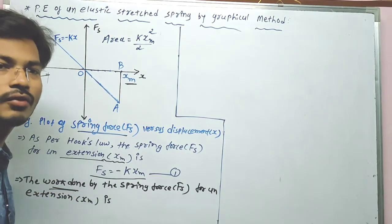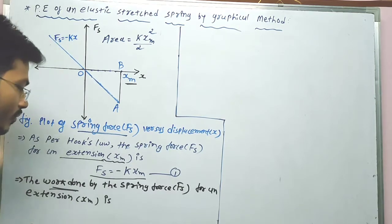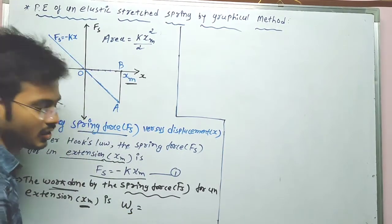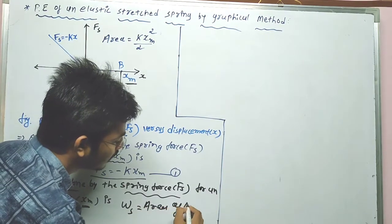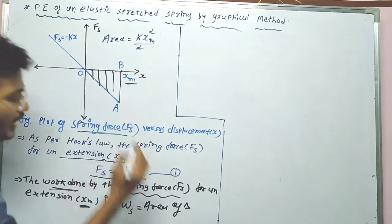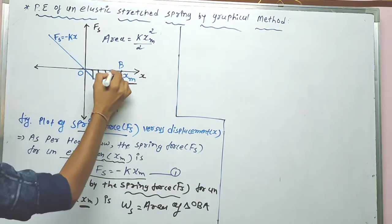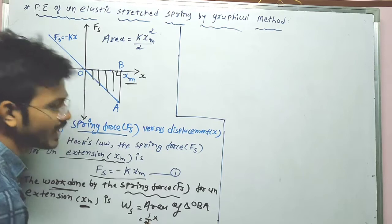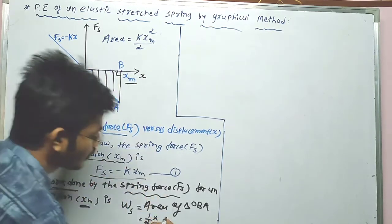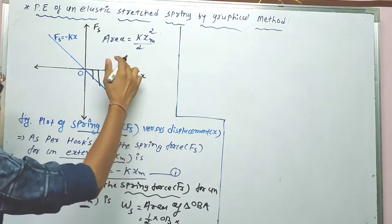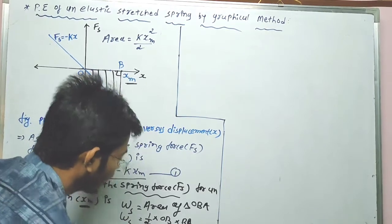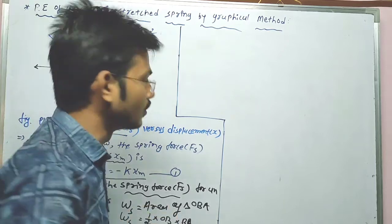Now we have to find out the work done by the spring force Fs for extension of xm. According to our figure, the work done by the spring Ws is equal to the area of a triangle. The area of a triangle is equal to half times base times altitude. The base here is OB, that means xm, and the altitude is BA, that means Fs.